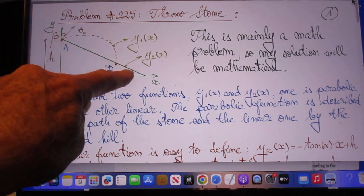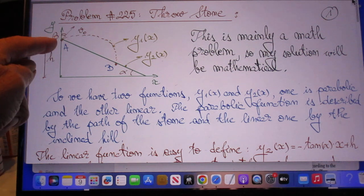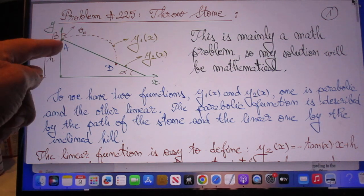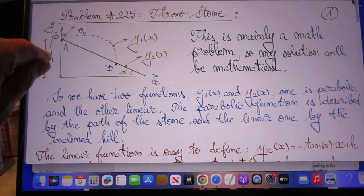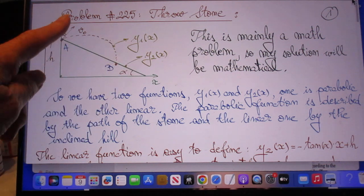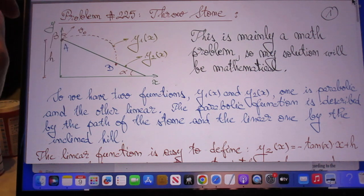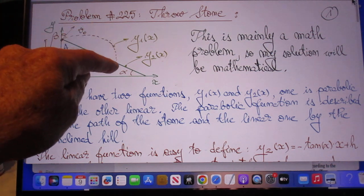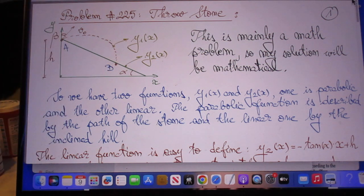This is an incline at angle alpha, this is a point H. The incline is straight. We have an object here that we throw in this direction beta with speed v_0. It goes here and the question is, what is the distance AB?